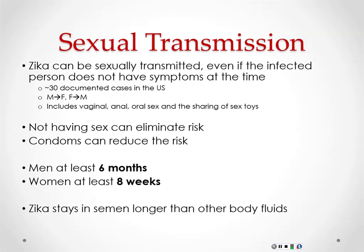Sexual transmission is a newer concern. There are about 30 cases documented in the U.S. — male to female and female to male — involving vaginal, anal, and oral sex, and sharing sex toys. Not having sex is the only 100% effective prevention; condoms can reduce risk. Men should abstain or use condoms for at least six months — Zika has been found in semen up to six months. Women should wait at least eight weeks. Zika stays in semen longer than any other bodily fluid, though researchers don't fully understand why.